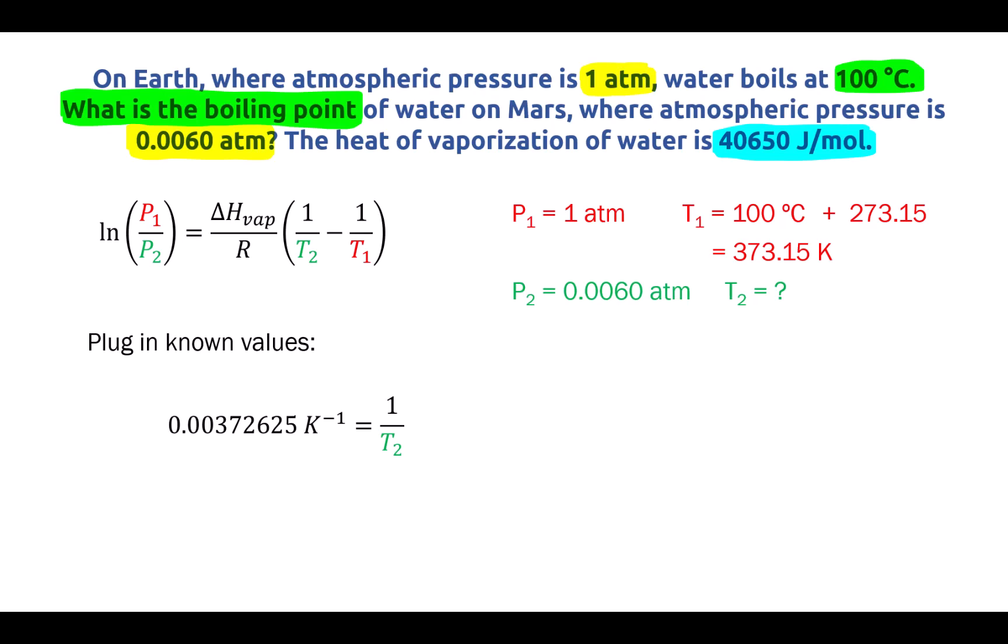Now this is not our temperature. This is 1 over temperature. So in order to solve for temperature, I'm going to have to take the reciprocal of the number on the left. What that means is T2 is going to be 1 over the number on the left side of the equation. That is going to equal 268.37 Kelvin.